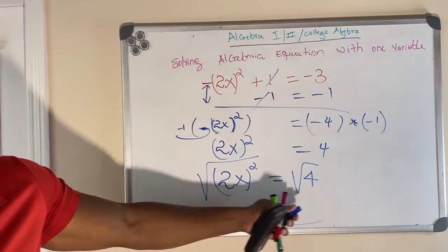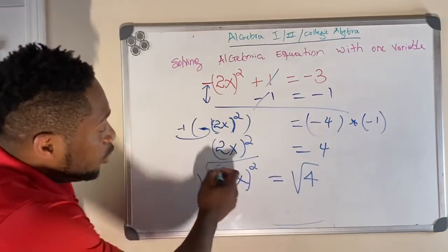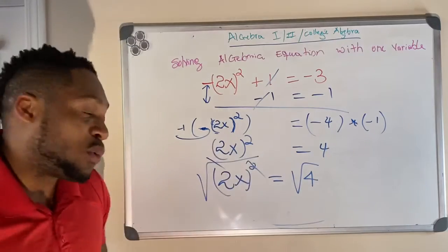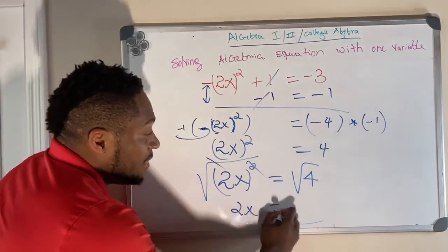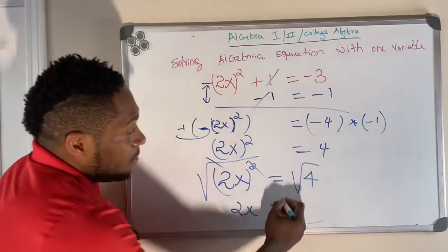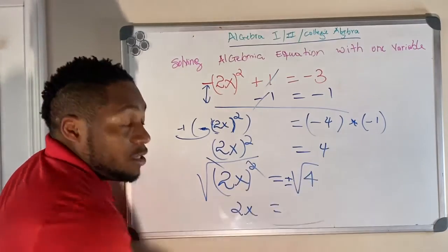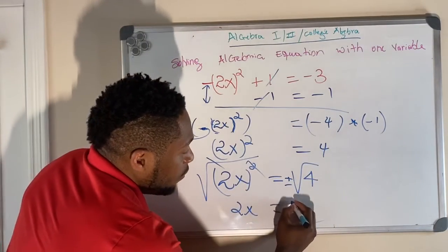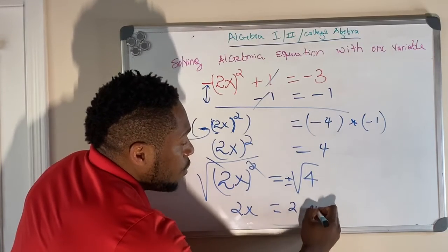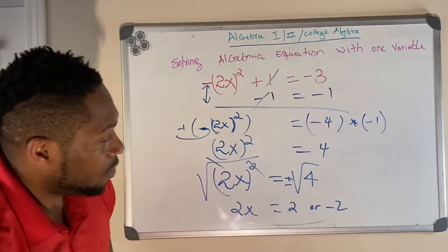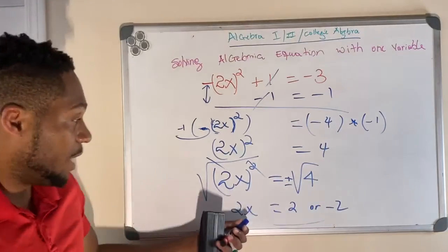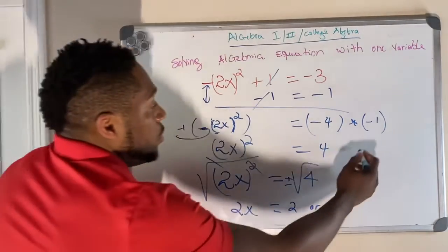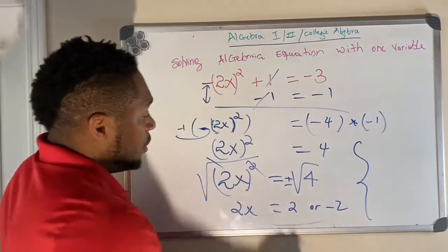So whenever you're taking the square root, you have two possible solutions. Square root of something squared is that thing, 2x. But you're going to have two possible solutions, plus or minus the square root of 4. So the square root of 4 can be, it's either going to be 2 or negative 2. So plus or minus the square root of 4, that gives you 2 or negative 2. So there are two possible solutions.